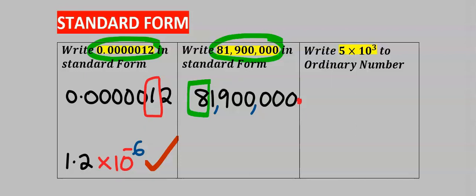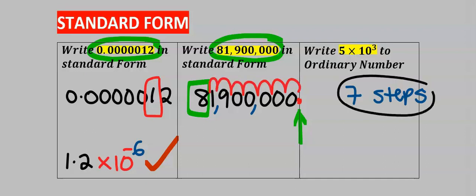Step number two: consider the position of the decimal. Step number three: move the decimal to the front of the first significant number — that is one, two, three, four, five, six, seven. Here we have seven steps in the movement and we're going to have 8.19.